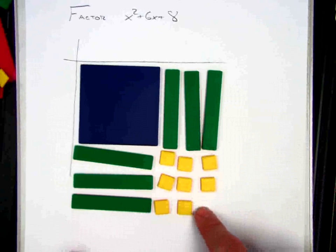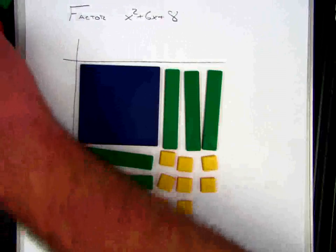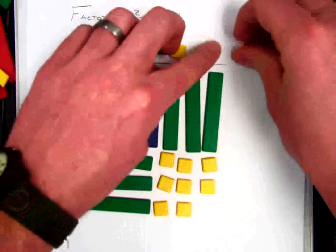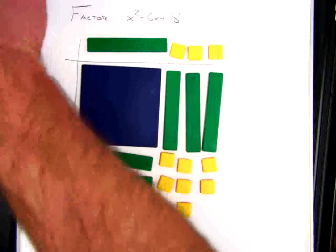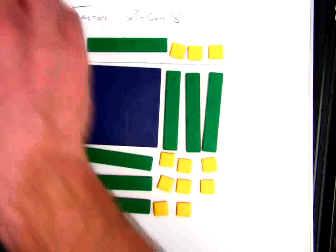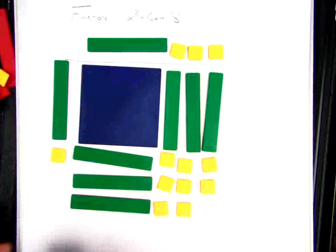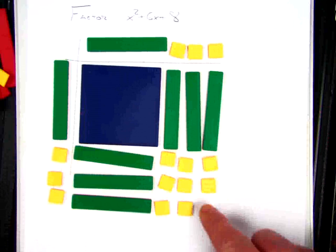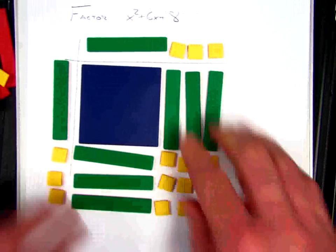So I know this isn't the correct factoring. This would have been, if it had worked, x plus 3 times x plus 3. But as we know, and as I can check by multiplying it back out, that wouldn't have worked because there needs to be something that goes right here.